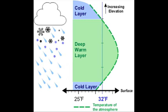Freezing rain, on the other hand, has a much deeper layer that is above 32 degrees. Once the ice particles melt, the liquid rain approaches a shallow freezing layer just above the surface. Since the liquid rain does not have time to re-freeze before reaching the surface, it falls as liquid and then re-freezes on contact with the surface.